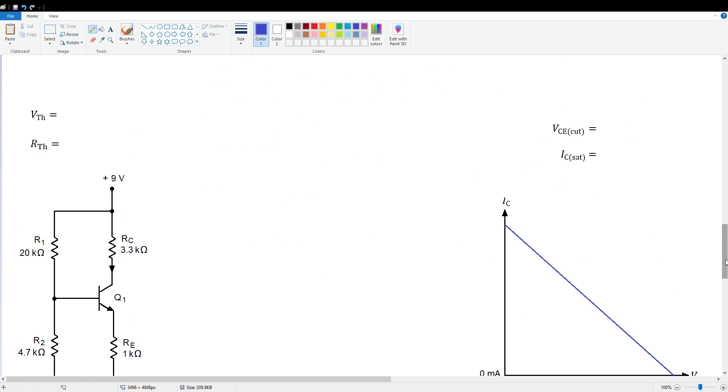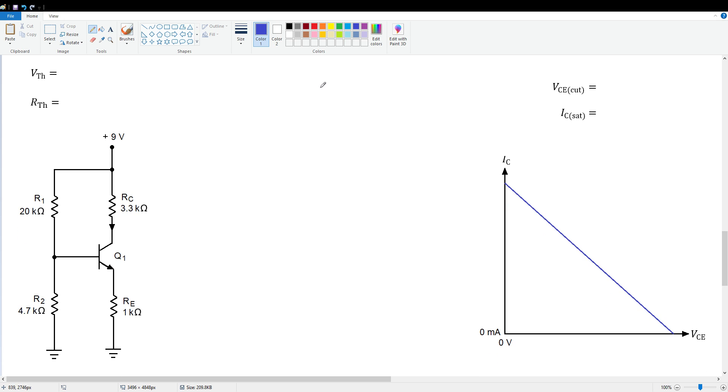So let's do another example just to solidify these concepts. It's a lower power supply voltage. This time we're sitting with a 9 volt power supply. And we've got 20K and 4.7K for our voltage divider. So let's find our Thevenin equivalent values. VTH equals VCC times R2 over R1 plus R2. So now it's 9 volts times 4.7K divided by 20K plus 4.7K. That gives us a VTH of about 1.71 volts.